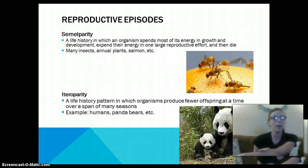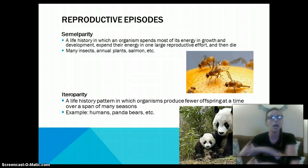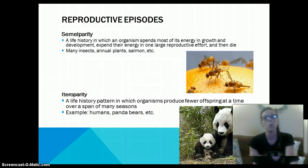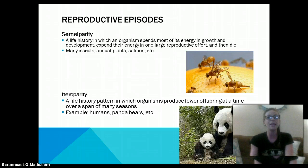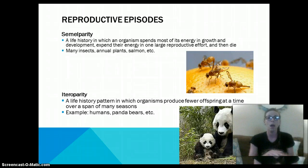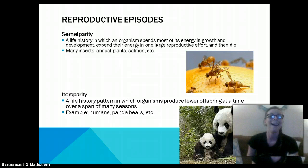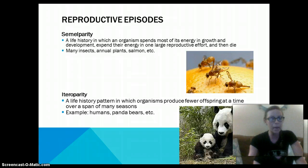Semelparity is a life history in which an organism spends most of its energy in growth and development, and then expends their energy in one large reproductive effort, and then dies. Many insects do this, as well as annual plants and salmon. So they will grow and develop, and when they have babies they will have a ton at one time, and then die. They don't really care for their young.